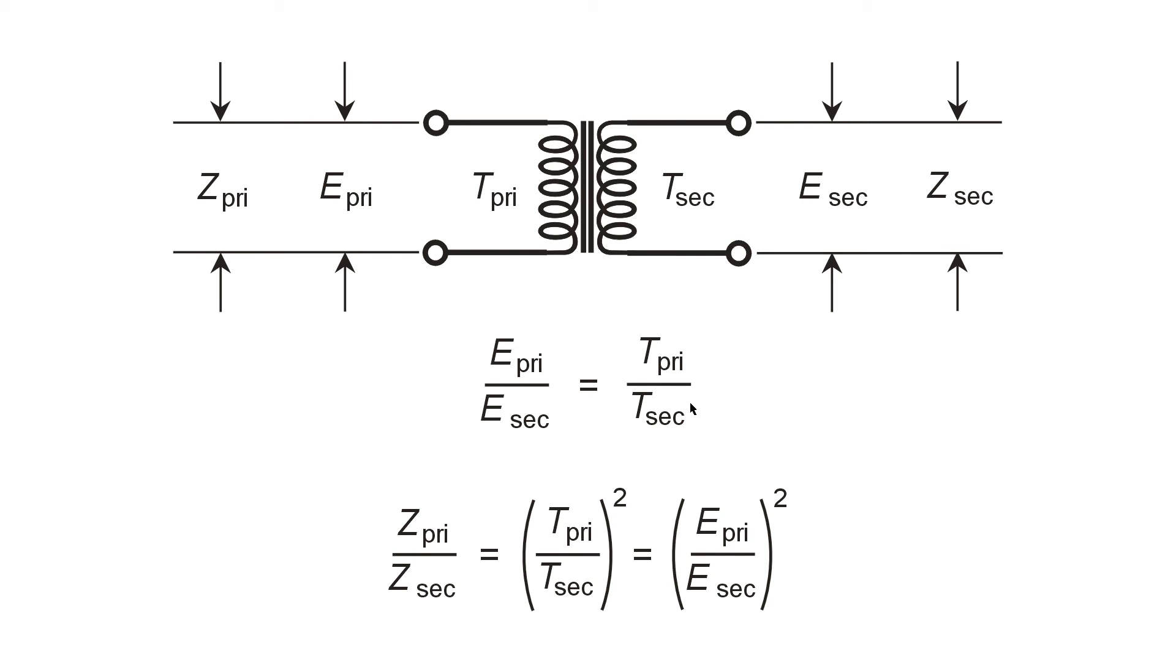So there are the formulas, Z meaning resistive impedance, no reactance, T meaning number of turns, and E meaning voltage.